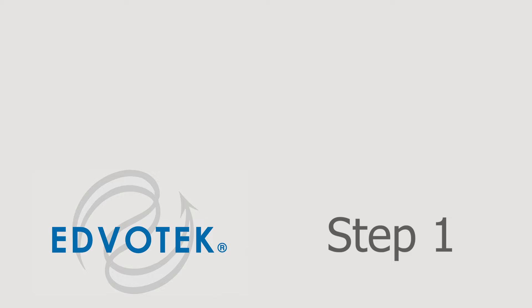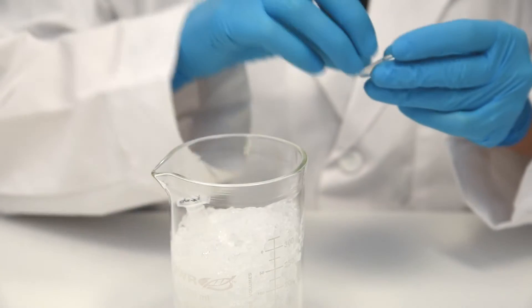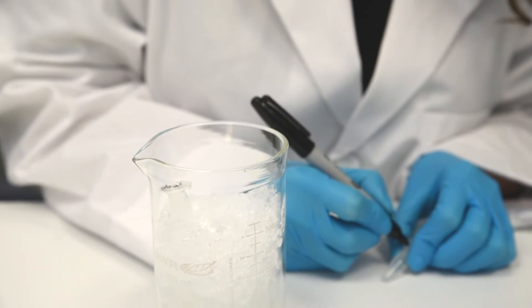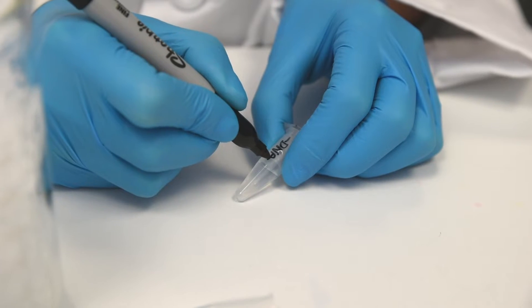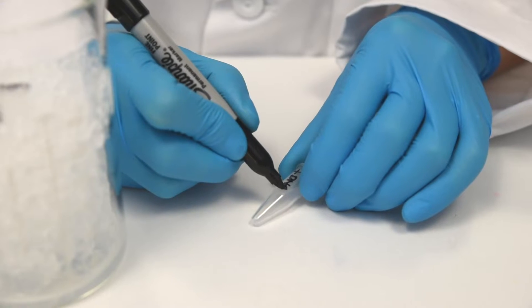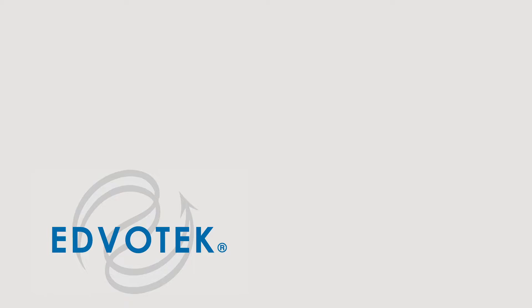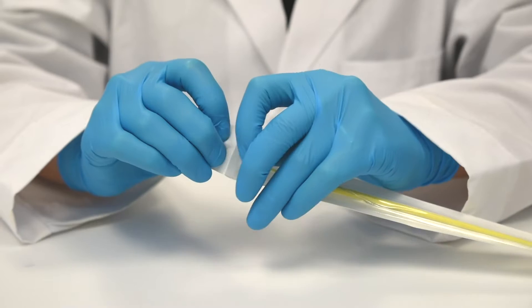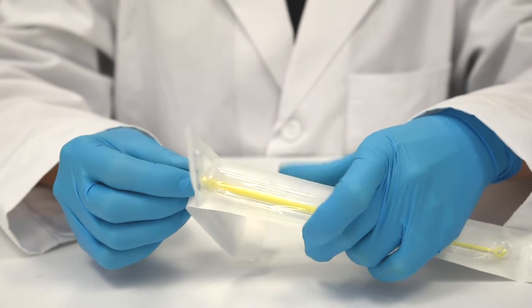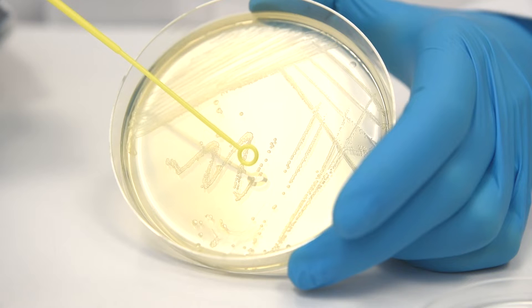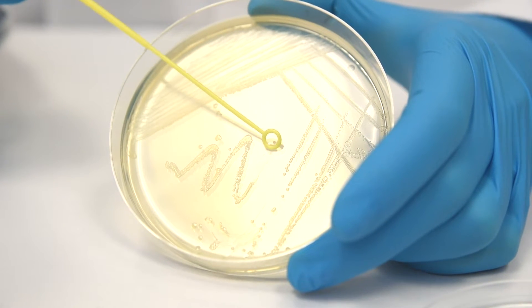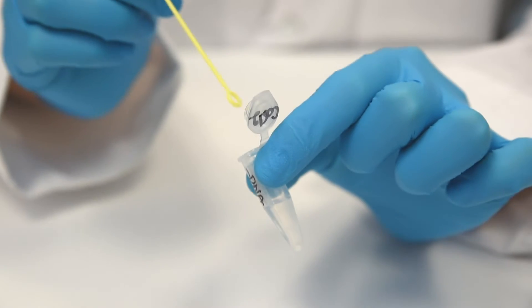Step 1. Label the microcentrifuge tube containing ice-cold calcium chloride as minus DNA, and the empty microcentrifuge tube as plus DNA. Step 2. Using a sterile inoculation loop, transfer approximately five well-isolated colonies from the E. coli source plate to the minus DNA tube.